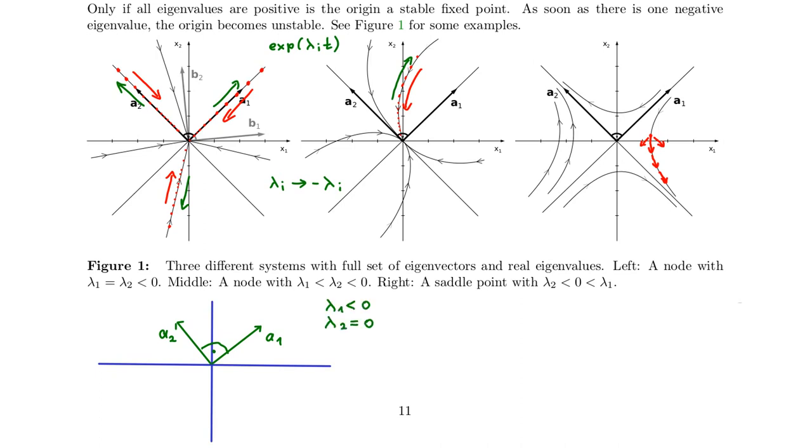If, for instance, we have a situation where the eigenvalue in the A1 direction is negative and the eigenvalue in the A2 direction is zero, then if we start at some point, there will be no movement in the A2 direction and there will be a decay in the A1 direction. So the dynamics simply leads onto this A2 axis.